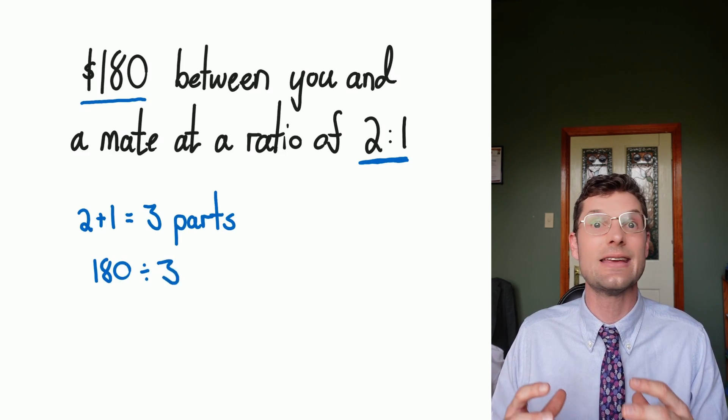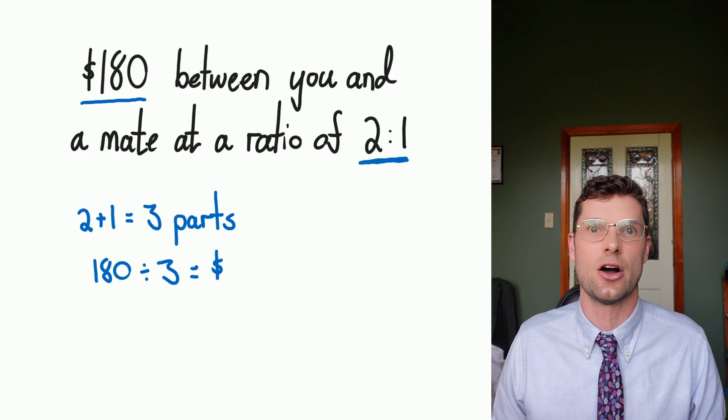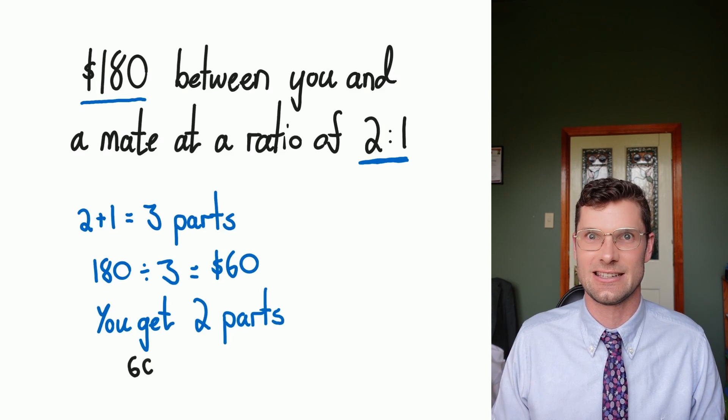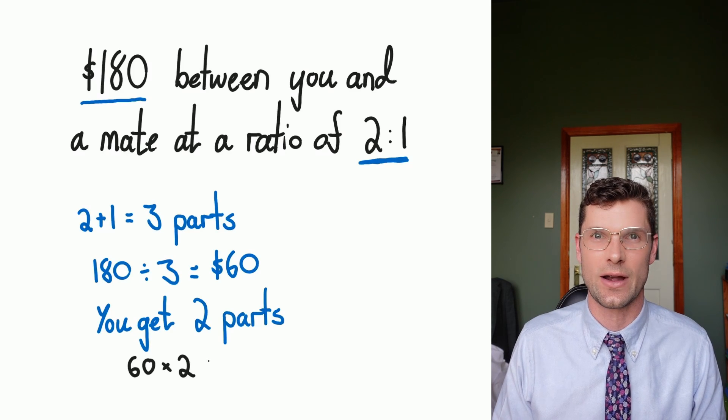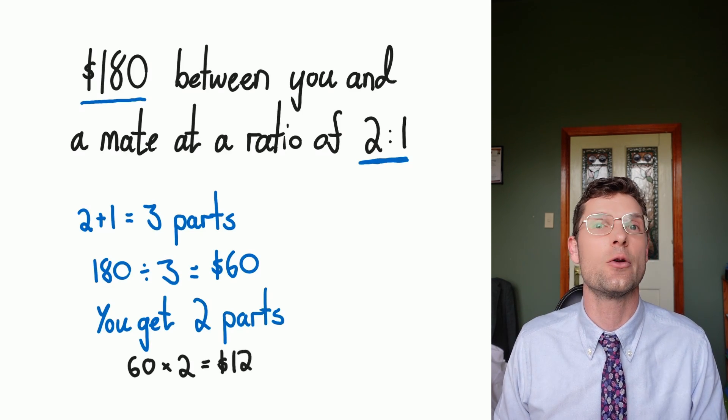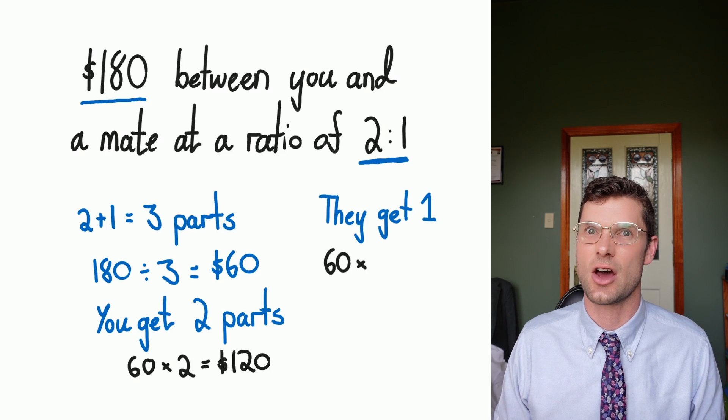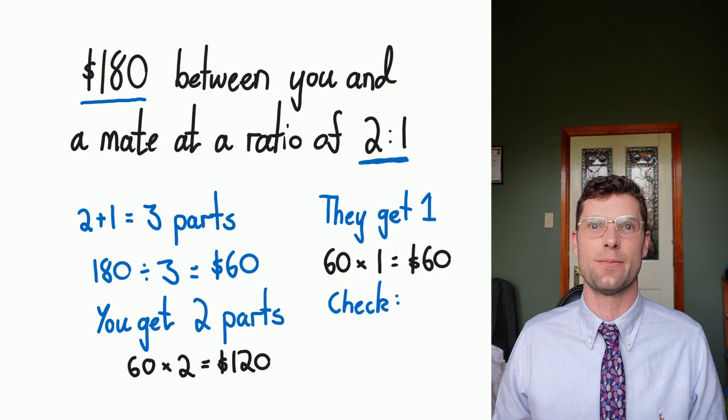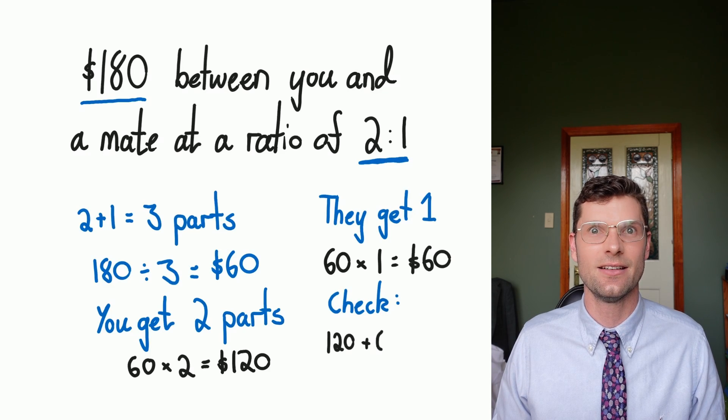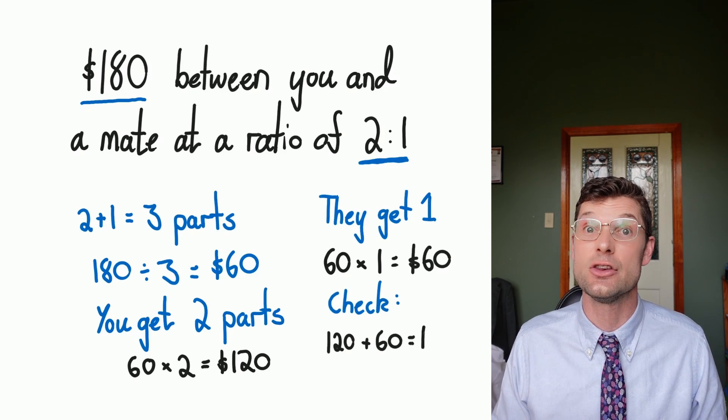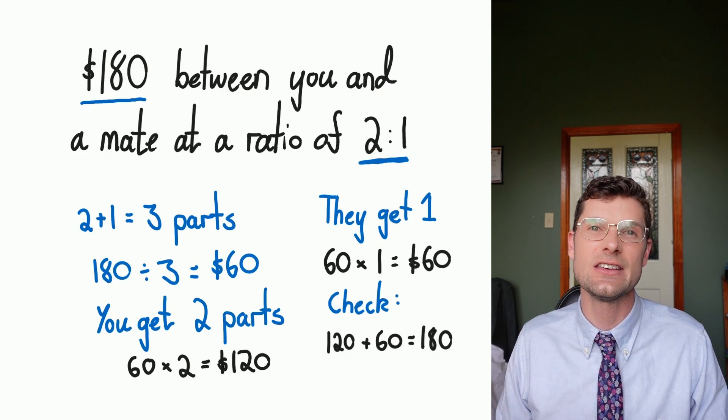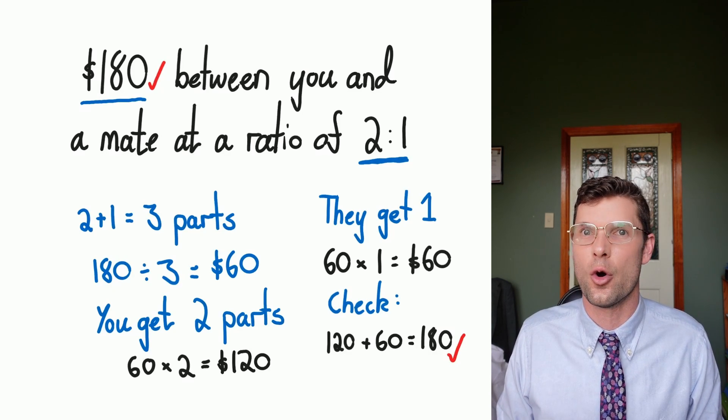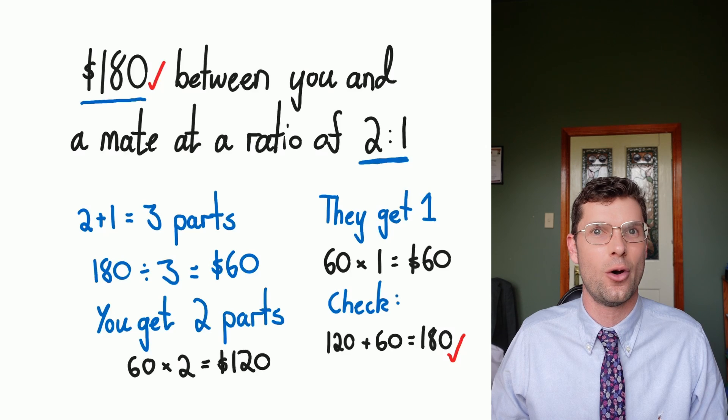This is gonna give us three equal portions of $60 each. But because you worked two of those portions, you get 60 times 2, which is $120. Your friend only worked for one of those portions, so they do 60 times 1, $60. Now we can check that we split the money. 120 plus 60 is 180. You work twice as hard and you've got twice as much money. This example makes sense, and this is much fairer than just splitting the money because you did do more work and you've been paid more as a result.